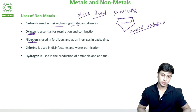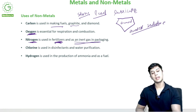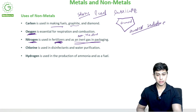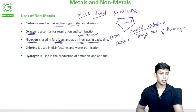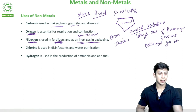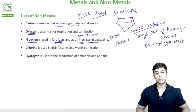Oxygen is essential for respiration and combustion — necessary for the survival of all species on Earth. Nitrogen is abundant in our atmosphere and in the ground. Nitrogen is important as it is used in fertilizers — without fertilizers, crops won't be good. Nitrogen also acts as an inert gas in packaging: chip packets are filled with nitrogen, not air, so the food inside stays fresh and doesn't get oxidized or go stale. Chlorine is used in disinfectants — water coming to our houses is disinfected using chlorine, which kills all bacteria. Chlorine is also used in swimming pools and water purification.